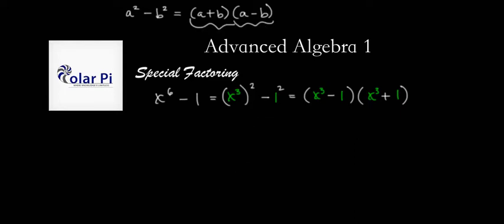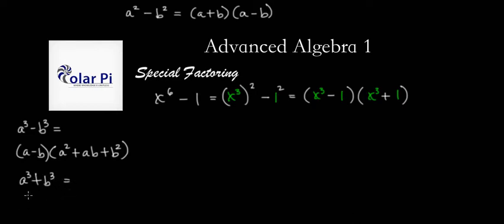Now we need difference of cubes and sum of cubes formulas. So we know a cubed minus b cubed equals a minus b times a squared plus ab plus b squared. And we also know a cubed plus b cubed is equal to a plus b times a squared minus ab plus b squared.